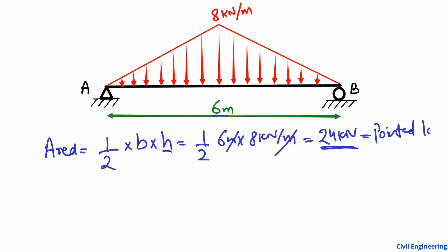This 24 kilonewton is the equivalent concentrated load acting on the beam, and it acts at the midpoint of the beam. Half of the triangle is on one side and half is on the other side.